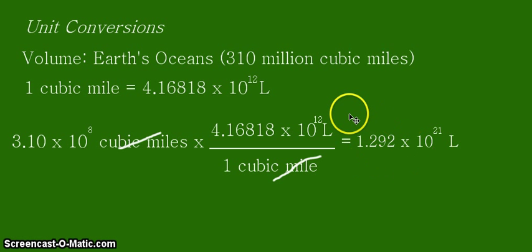Before you report your final answer, you have to always go back to the given and check the number of significant figures. Since originally we have 310 million, that's a little ambiguous in the number of significant figures. We started with the scientific notation with only three significant figures.